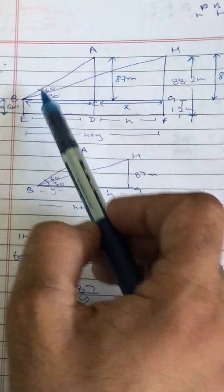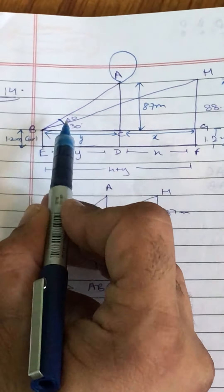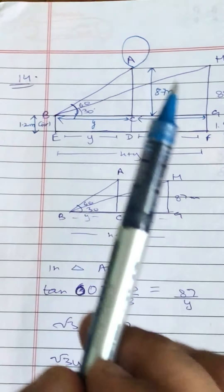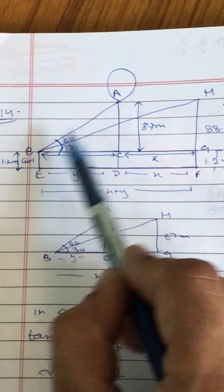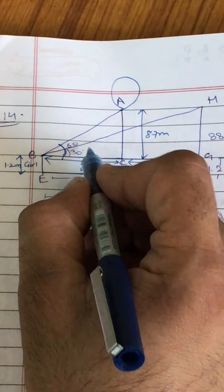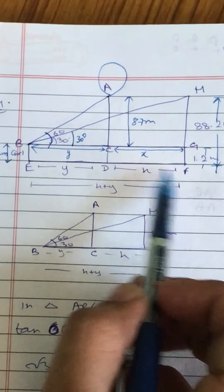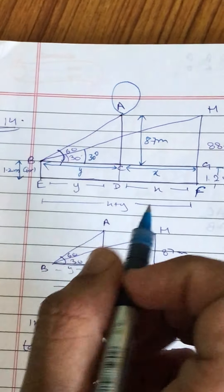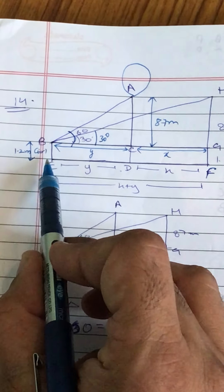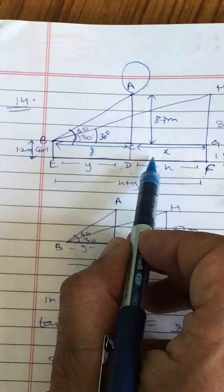Yahan par koi ladki khadi hai. Same figure maine banaya hai — BE height hai girl ki, 1.2 meter. Yahan A point pe koi balloon hai jisko wo dekh rahi hai, aur poora angle of elevation 60 degree aa raha hai. Same balloon udke H point pe chala jaata hai, aur jab wo ladki dekhti hai balloon ke top ko, to angle of elevation 30 degree hai. BCDE rectangle hai, CGFD rectangle hai. ED ko Y maana hai — ED aur BC barabar hain (rectangle ki opposite sides), to BC bhi Y ho gaya. DF aur CG bhi barabar hain, to X ho gaya.